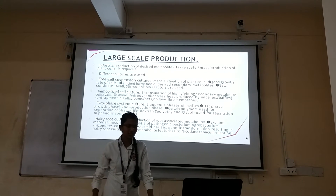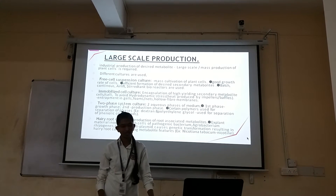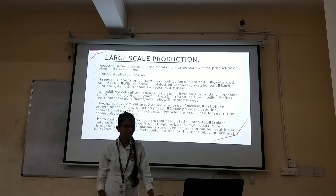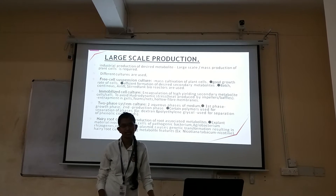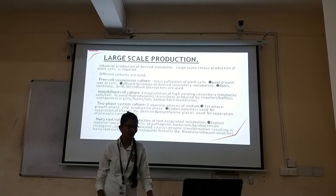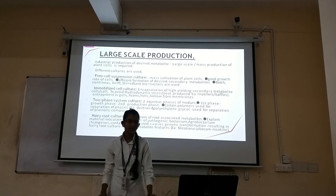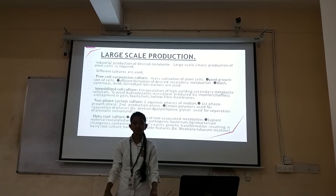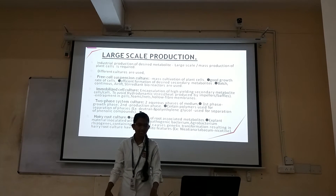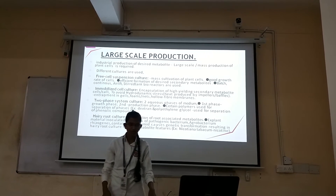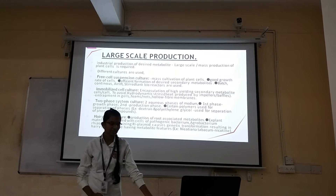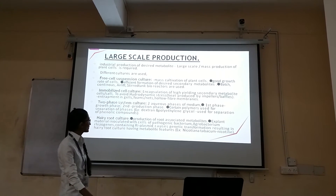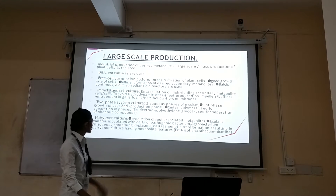In the two phase system, two phases of the medium are used: the first phase is for growth and the second is for production of secondary metabolites. Certain polymers are used for separation of the phases — for example, dextran and polyethylene glycol — used for the separation of phenolic compounds.